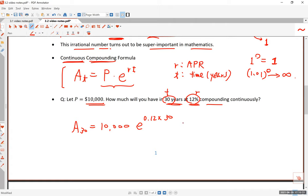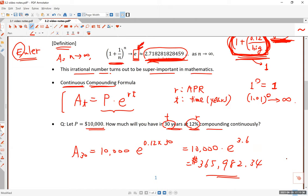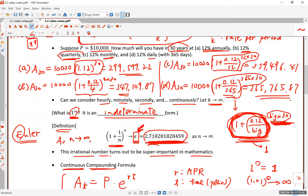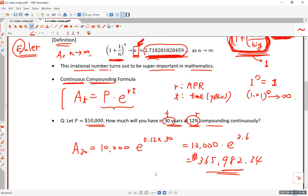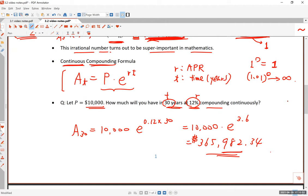Let me write this down: $10,000 times e raised to the 3.6 power. All you have to do is enter this on the calculator and you'll find this turns out to be $365,982.34. That's the number of dollars you'll have after 30 years. This number is fairly close to the daily compounding number, $365,765 - it's slightly more, a few hundred dollars more after 30 years. This also shows you that the more frequent the compounding, the more money you'll end up with.